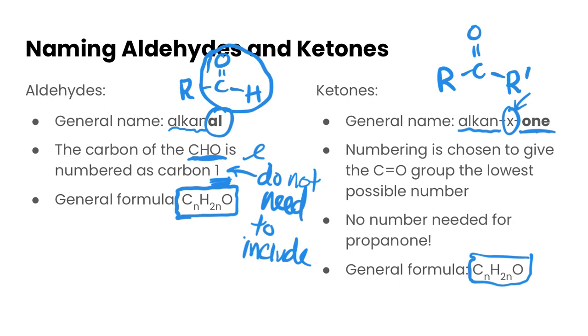The numbering is chosen to give priority to the carbonyl group so it has the lowest possible number. An interesting fact is that there's no number needed for propanone because the carbonyl has to be in the middle of the two other carbons. So again, it can create redundancy if you did include the number there.